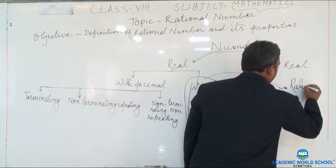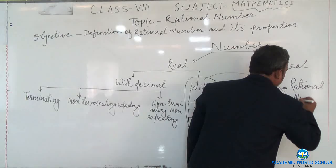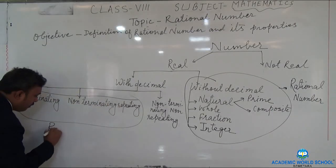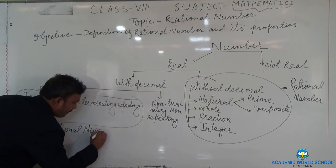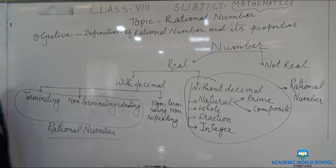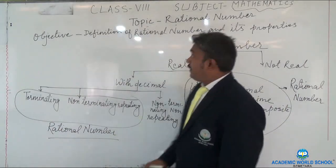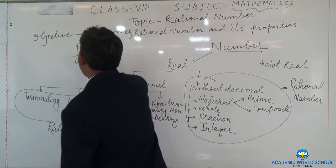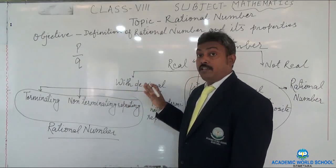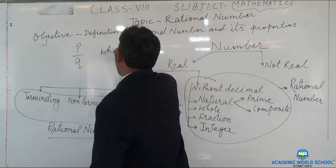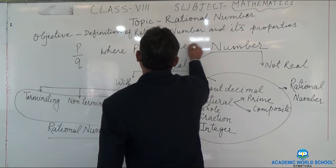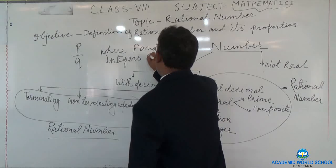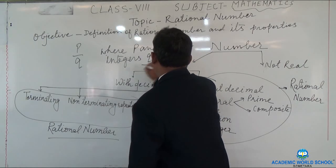This whole group can be called rational numbers. We have studied the definition of rational number in class 7. The definition says: a number which can be written in the form of P by Q, where P and Q are integers. Remember that — P and Q are integers, and Q is not equal to zero. That is a very important condition here.